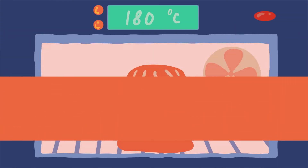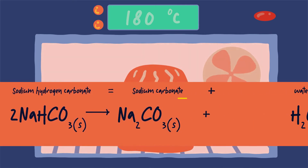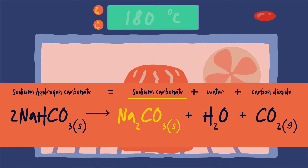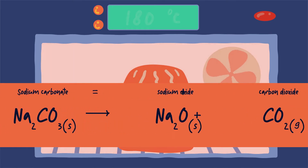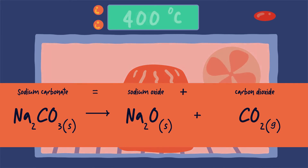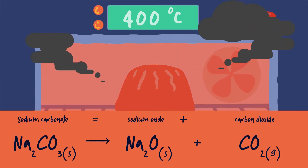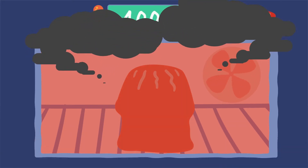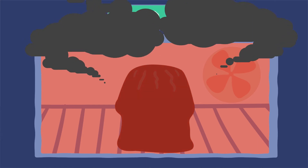The breakdown of sodium hydrogen carbonate makes sodium carbonate, Na₂CO₃. Sodium carbonate is quite stable to heat and only decomposes if heated above 400 degrees centigrade. This is well above cake baking temperature, so this reaction doesn't happen — otherwise the whole cake would thermally decompose.